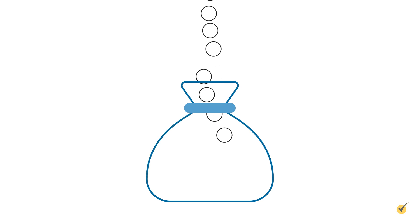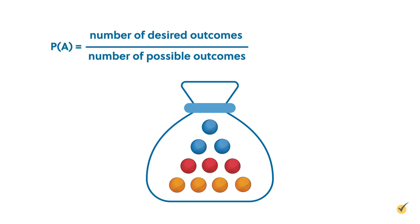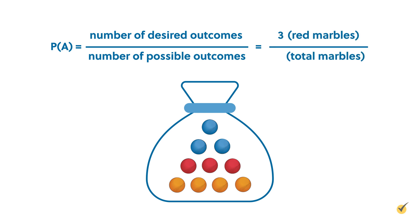Here's an example of a basic probability problem. There are 10 marbles in a bag — three are blue, three are red, and four are orange. What are the odds of pulling out a red marble? To solve this, we place the number of desired outcomes on top. In this case, it's three because there are three red marbles, and the total number of possible outcomes on the bottom — this is 10, since there are 10 total marbles in the bag.